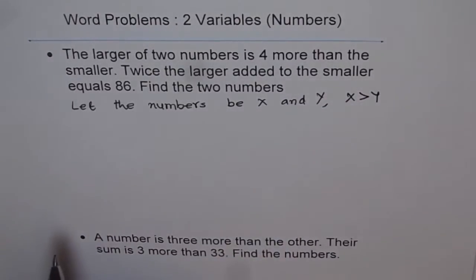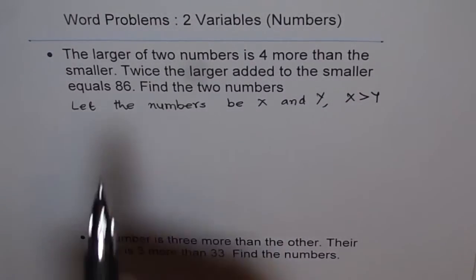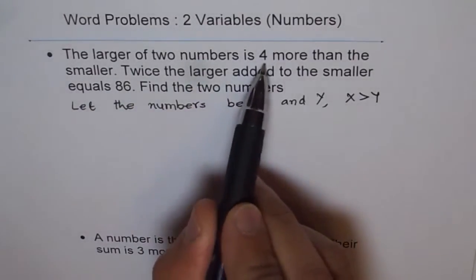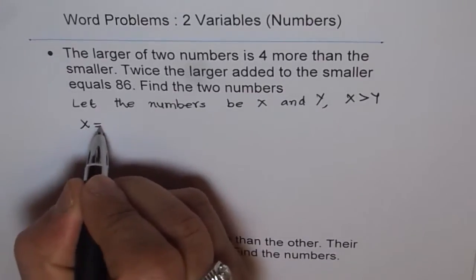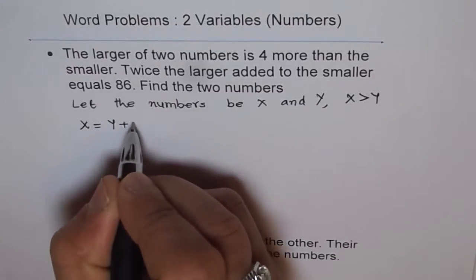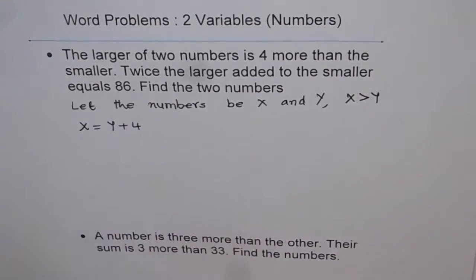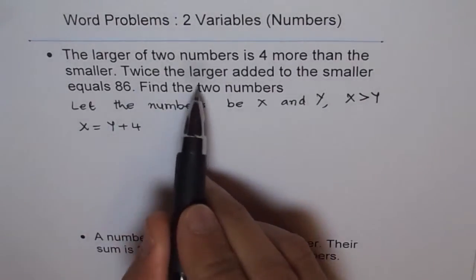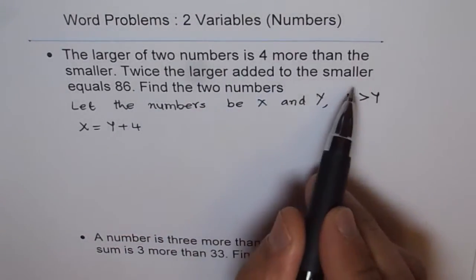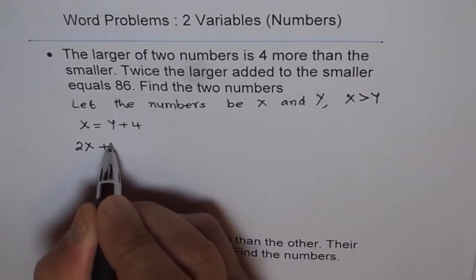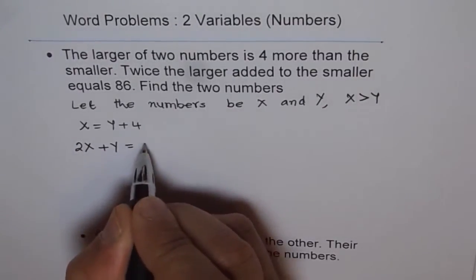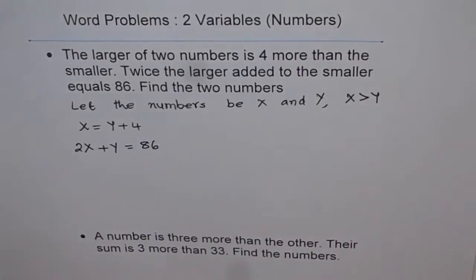Now let's form equation with these two variables. It says the larger of two numbers is four more than the smaller. That means x is equal to y plus four. Twice the larger added to smaller equals 86. So we get the second equation.